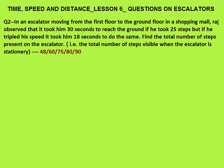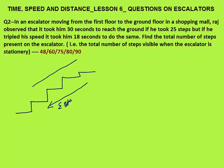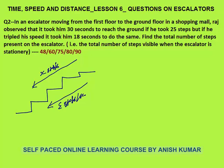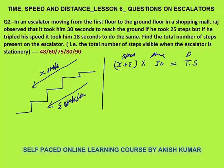Second question: a moving escalator goes from first floor to ground floor. Let escalator speed be e steps per second moving down. Raj observed it took him 30 seconds to reach the ground if he took 25 steps. Let Raj's speed be x steps per second going down. We can make an equation: effective speed is x plus e, time is 30 seconds, giving (x plus e) times 30 equals total steps of escalator.